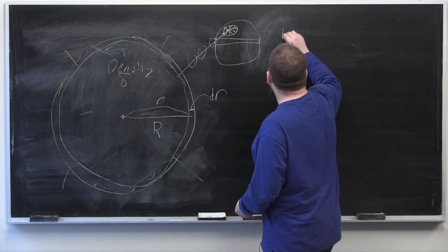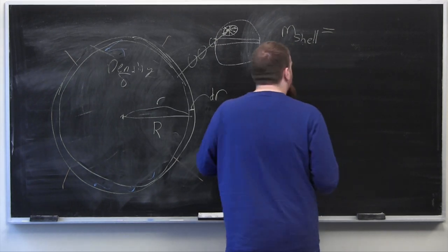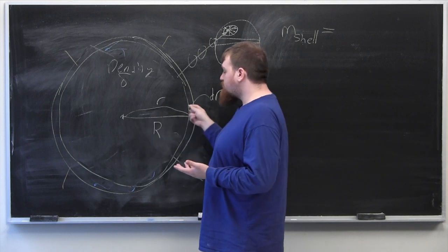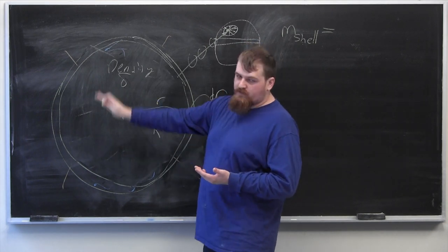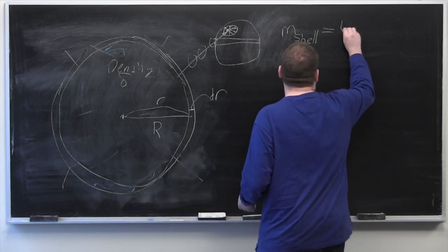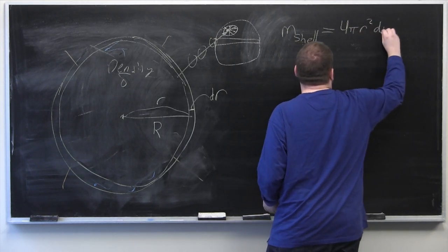So the mass of one of these shells is going to be equal to the density of Alderaan times the thickness of the shell times the surface area of the sphere that remains. So this is going to be equal to delta times 4 pi r squared dr.